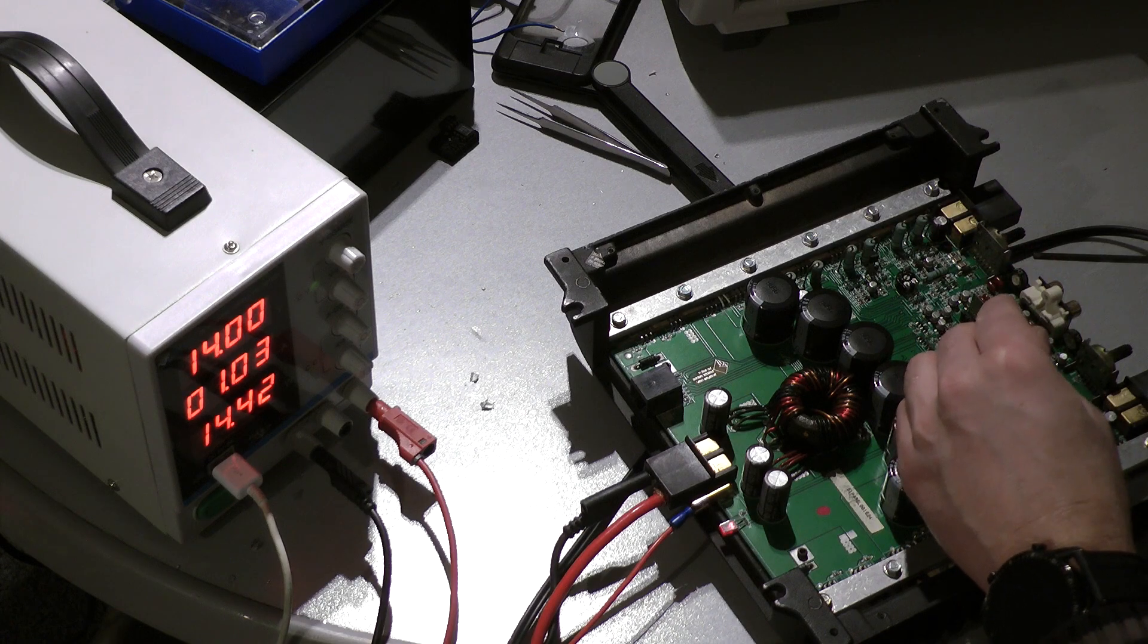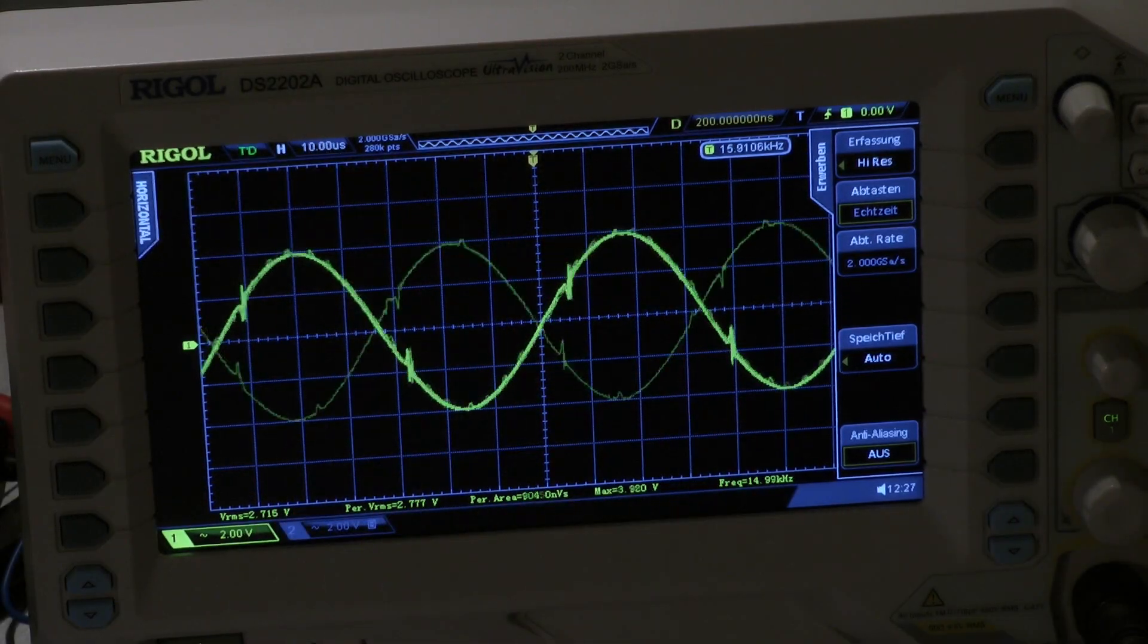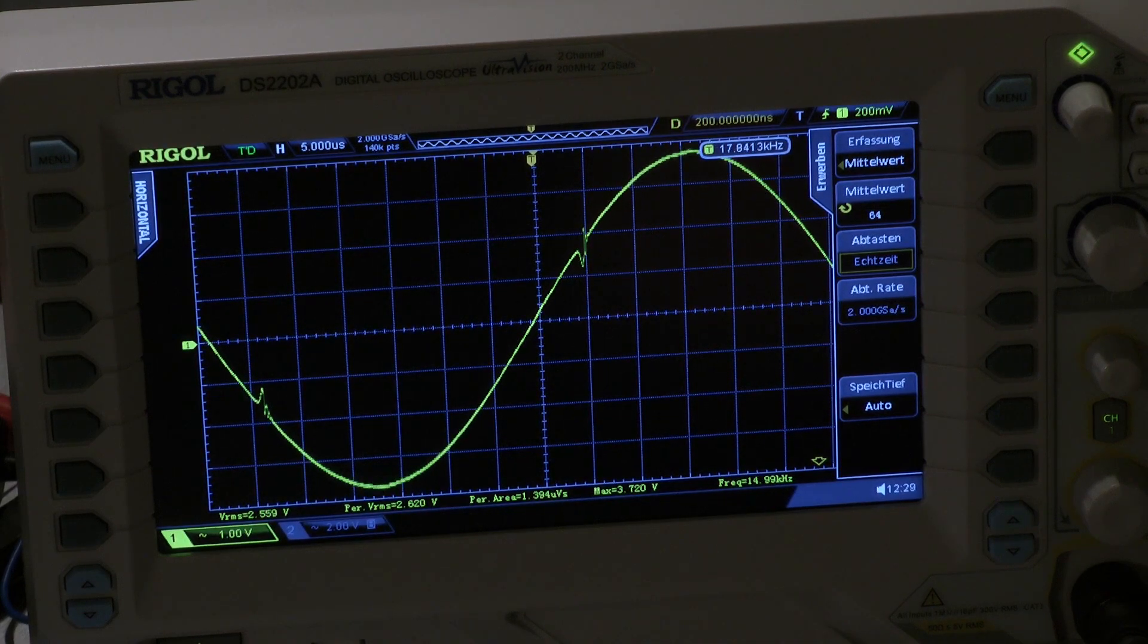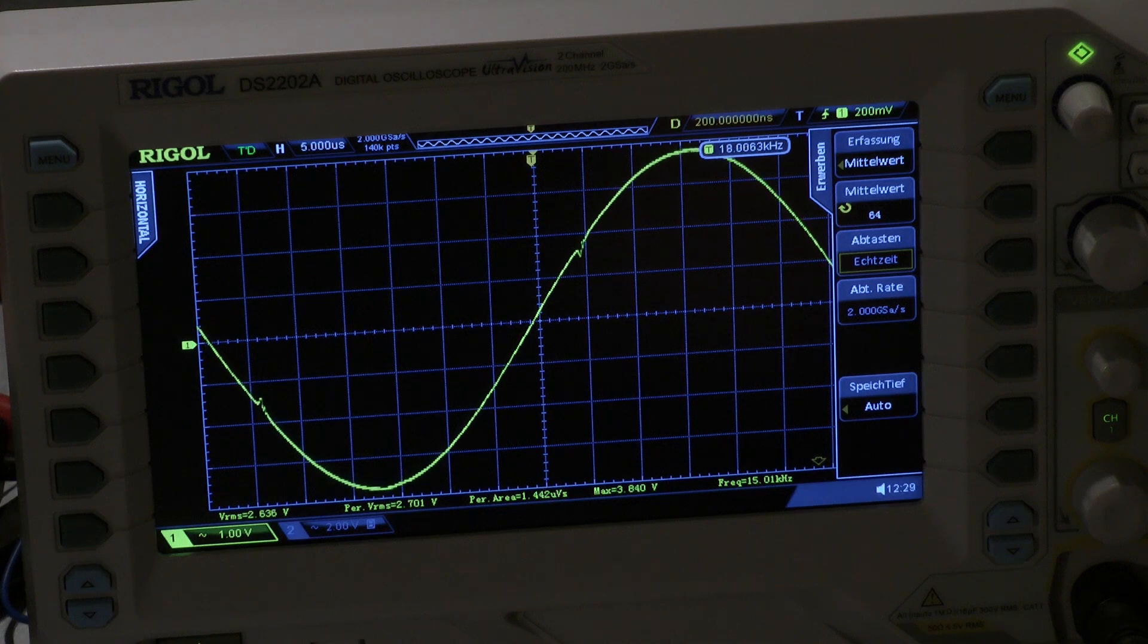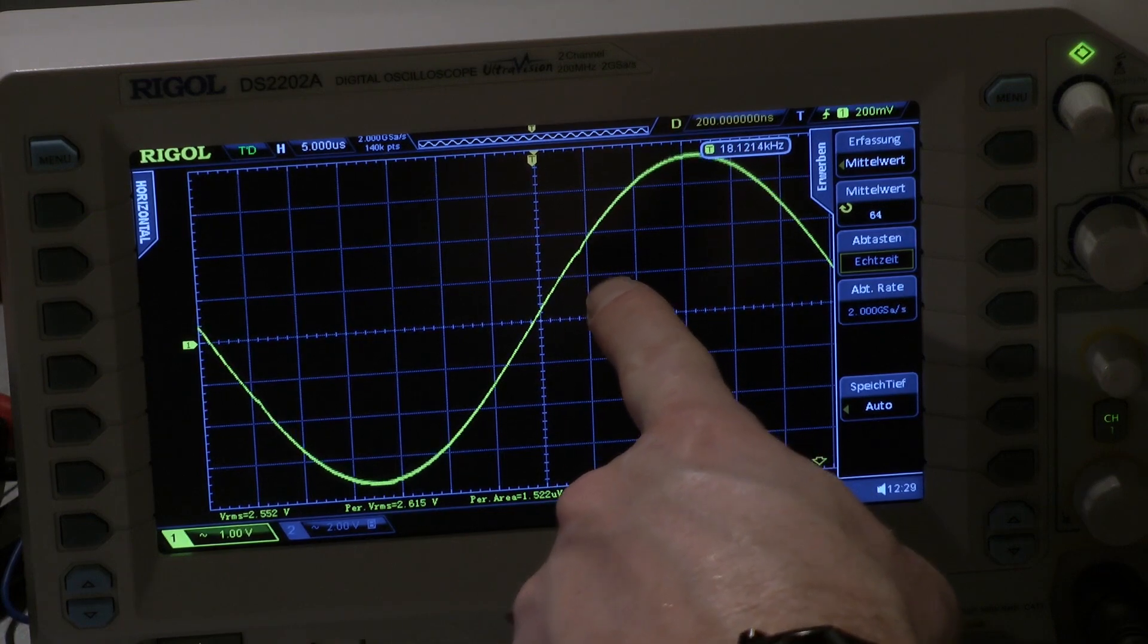Both pots counterclockwise. These notches here, this is crossover distortion. Now I turn clockwise slowly. You can see it disappears. So I leave a very small notch.